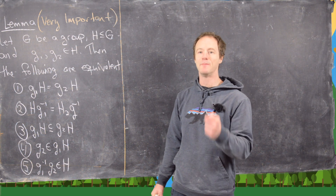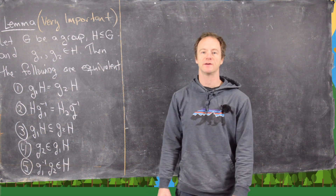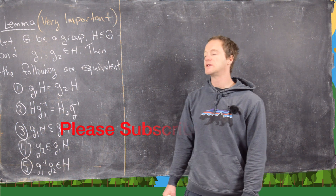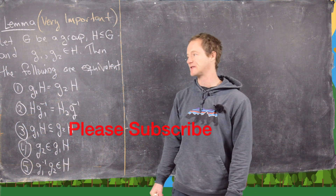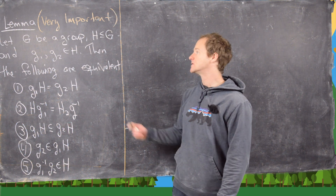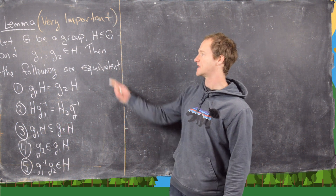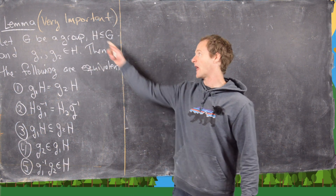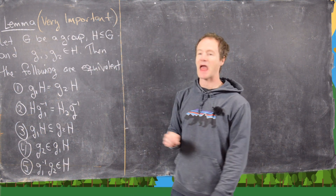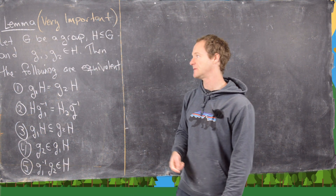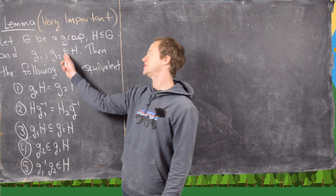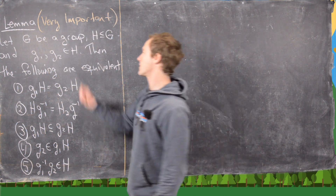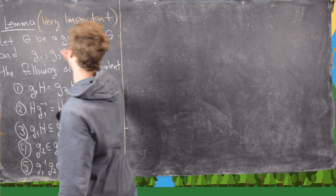In this video we're going to look at maybe the most important lemma for determining if cosets are the same. So let's look at the setup. Let G be any group and H be any subgroup of that group G, and then g1 and g2 are any elements from the group G.